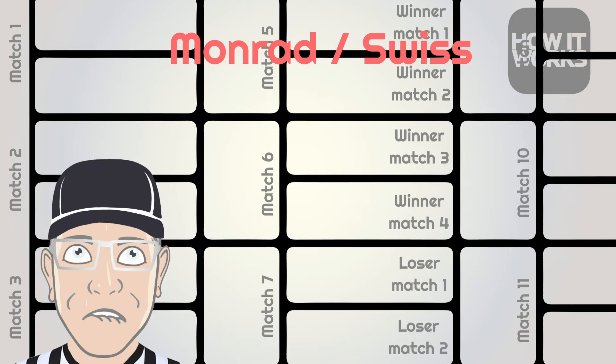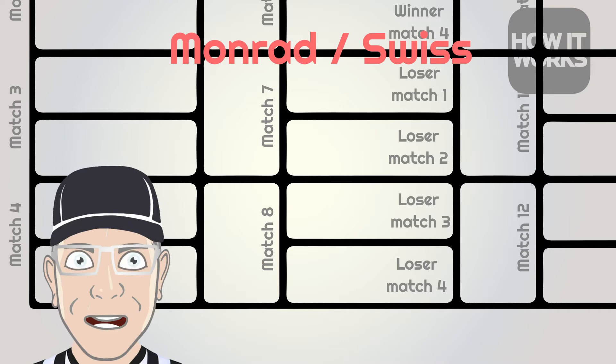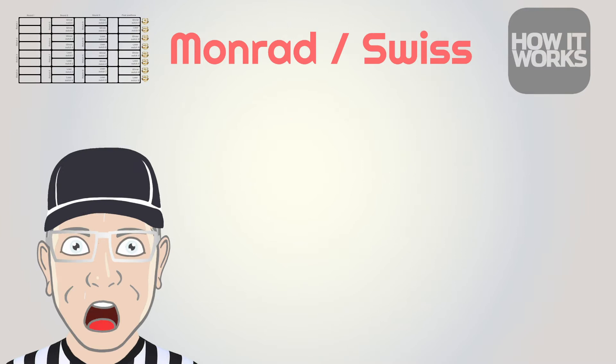The process continues through all the rounds. In the final round, the top two players in the draw play off for first place, the next two for third, the next two for fifth, and so on.